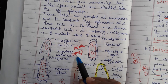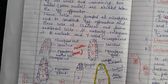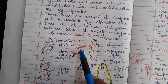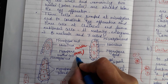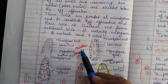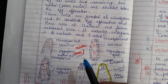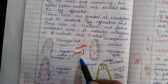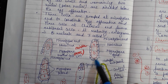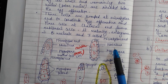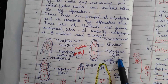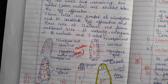Looking at the diagram: the megaspore mother cell is 2N diploid. It undergoes meiotic division — a reductional division — making all resulting cells haploid. The two cells produced at the first division are called the megaspore dyad.